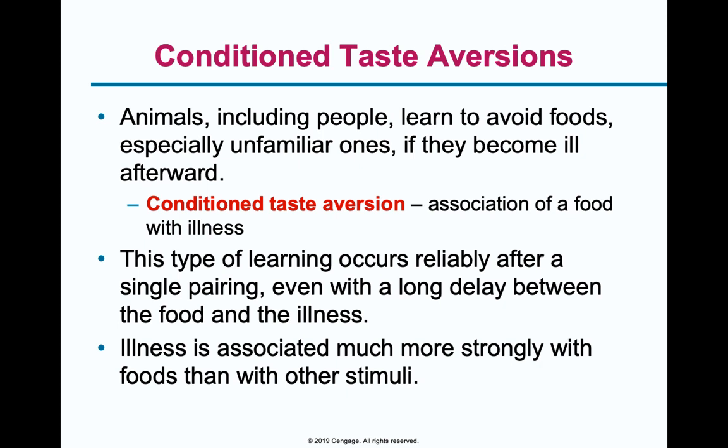Conditioned taste aversions — think about a time you had food poisoning or the flu. You had some food, and then you got sick right afterwards, and then you develop a taste aversion because you no longer want to eat that food. That's the idea of a conditioned taste aversion — associating food with illness. It might not have been the food that got you sick, but the idea that it happened right before you got sick is why you developed this taste aversion. This is something that's also built into our biology — once you eat something and get sick, don't eat that again. Illness is associated more strongly with foods than other stimuli because that matters to us very much.